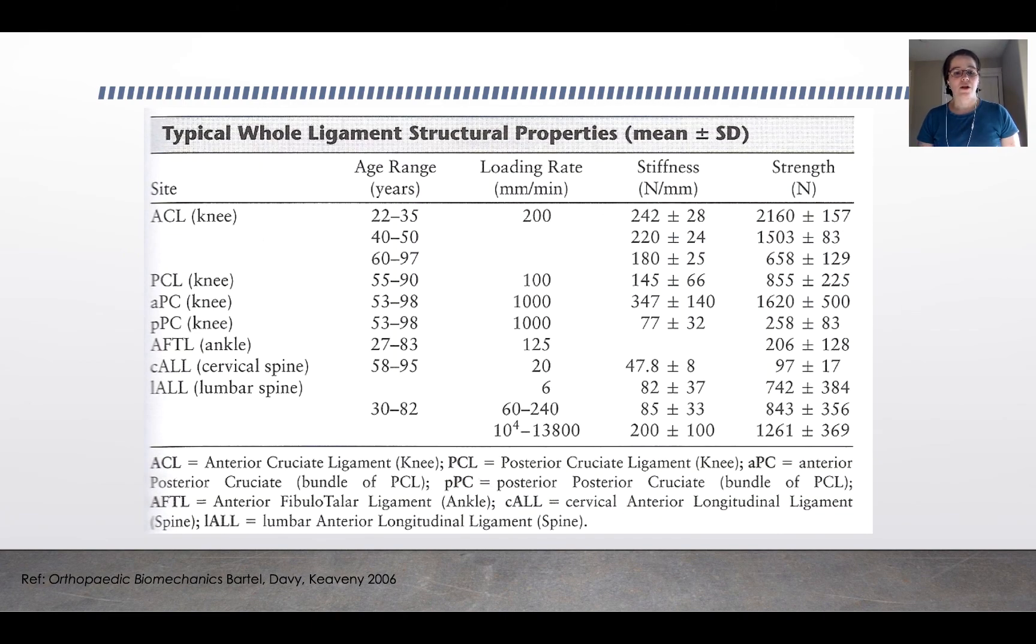Here's a table from Orthopedic Biomechanics by Bartel that compares the age range and the site location of some different ligament properties for whole ligaments. That means testing the entire ligament as a whole as opposed to testing just the collagen fibrils or one of the bundles of collagen in the ligament. And you'll note that there's a loading rate provided and a stiffness and an ultimate strength for the tendon. And you can see, as a person gets older, the ACL gets less stiff. You can also see that there's some site dependence here, even within the same age groups.